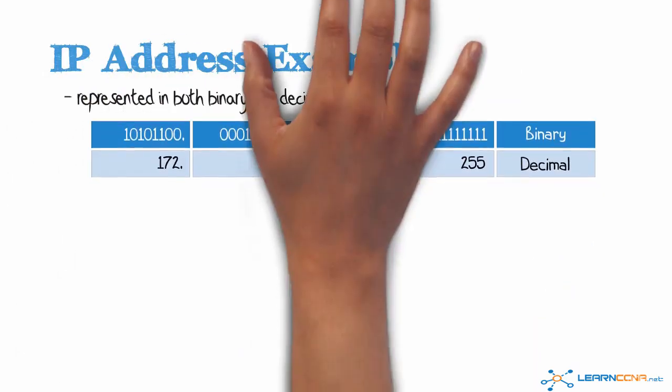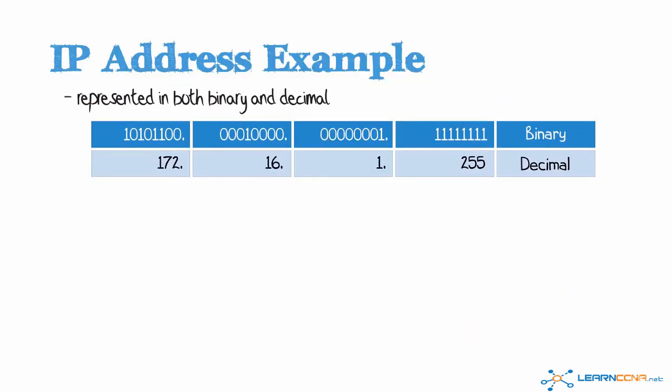So now let's do it in reverse, binary to decimal. In this example, if we were given this IP address in binary notation, how would you convert it to decimal?